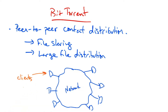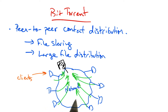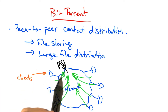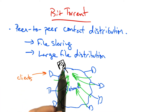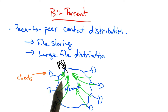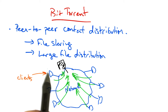Suppose we have a network with a bunch of clients, all of whom want a particular file, and the file might be particularly big. Now those clients could all fetch the same file from the source or the origin.